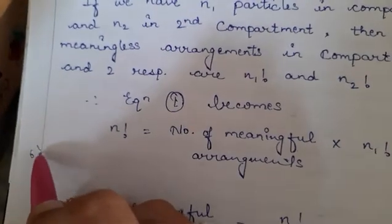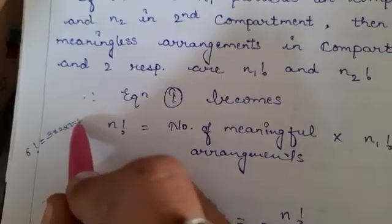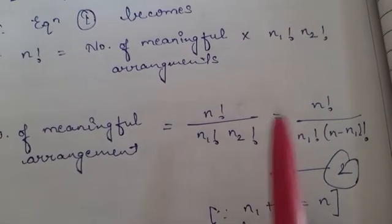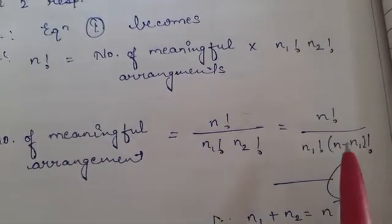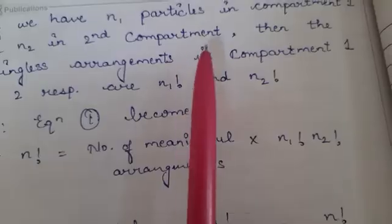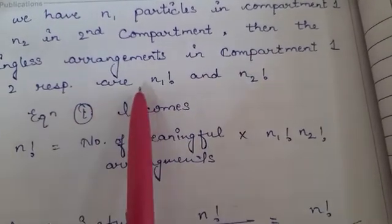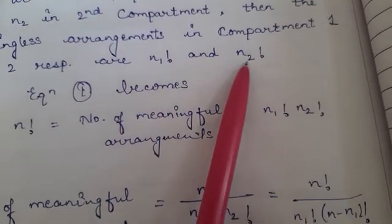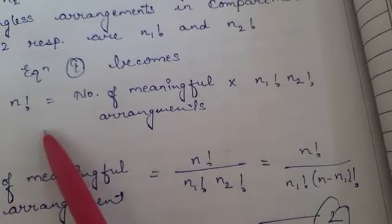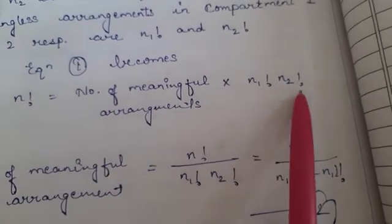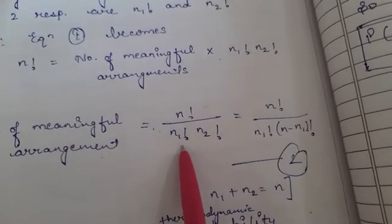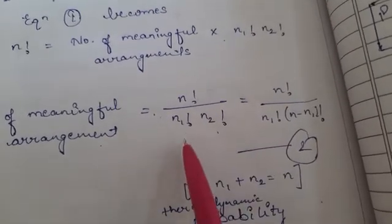Three factorial equals three cross two cross one, equal to six possible meaningless arrangements. If we have N1 particles in the first compartment and N2 particles in the second compartment, then the meaningless arrangements are N1 factorial and N2 factorial respectively. The total meaningless arrangements are N1 factorial into N2 factorial. So equation one becomes: N factorial equals the number of meaningful arrangements multiplied by N1 factorial into N2 factorial. Therefore, the number of meaningful arrangements equals N factorial divided by N1 factorial into N2 factorial.